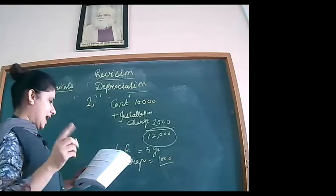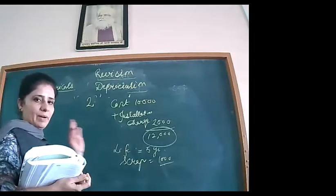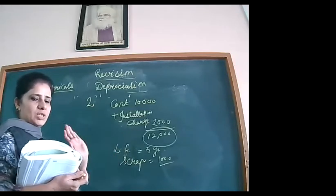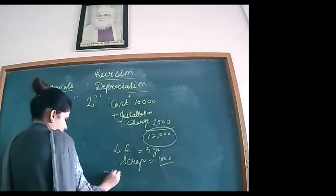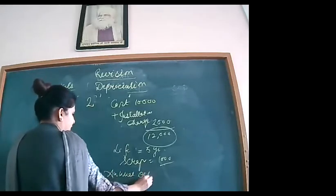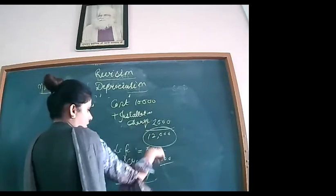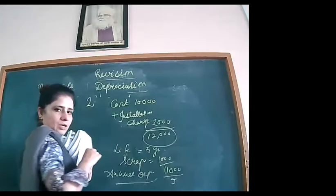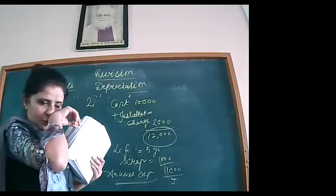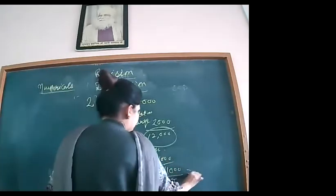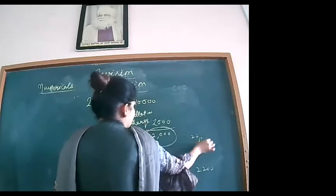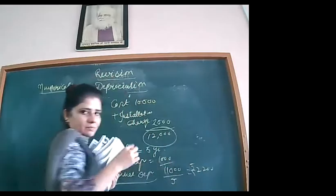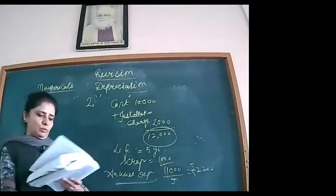You are asked to calculate annual depreciation. Annual depreciation = (Cost − Scrap) ÷ Life = (12,000 − 1,000) ÷ 5 = 11,000 ÷ 5 = ₹2,200. In an MCQ, if the ₹2,200 option appears, put the tick on that.